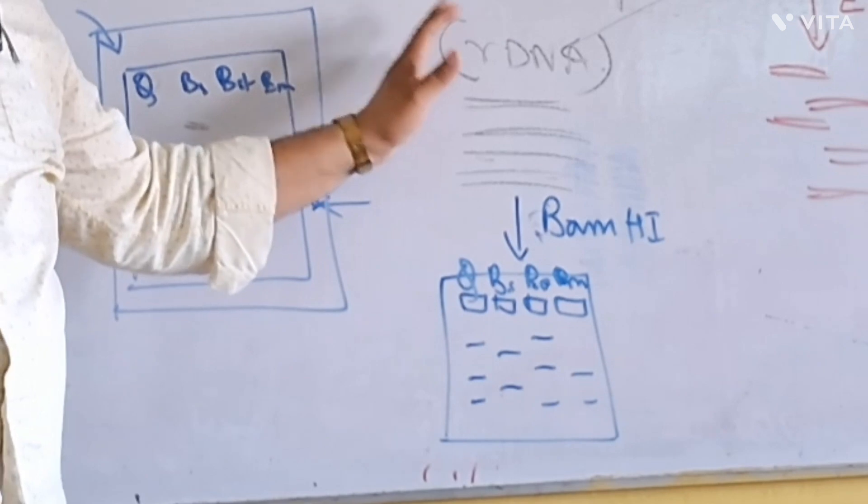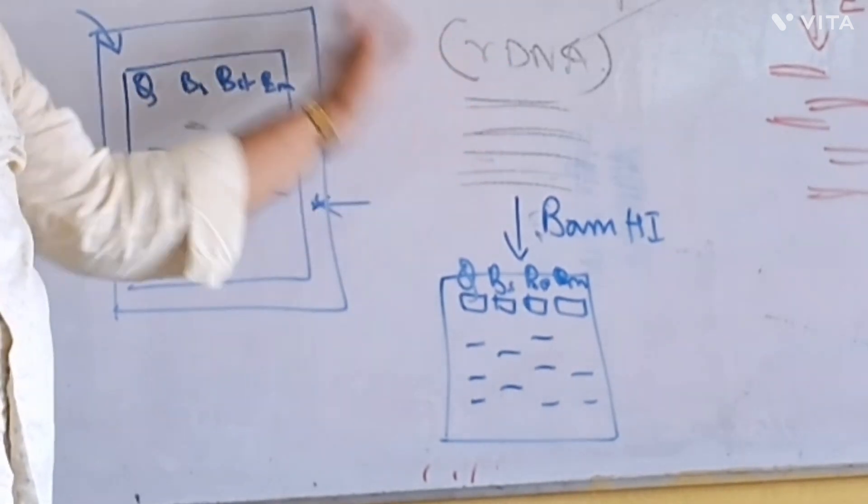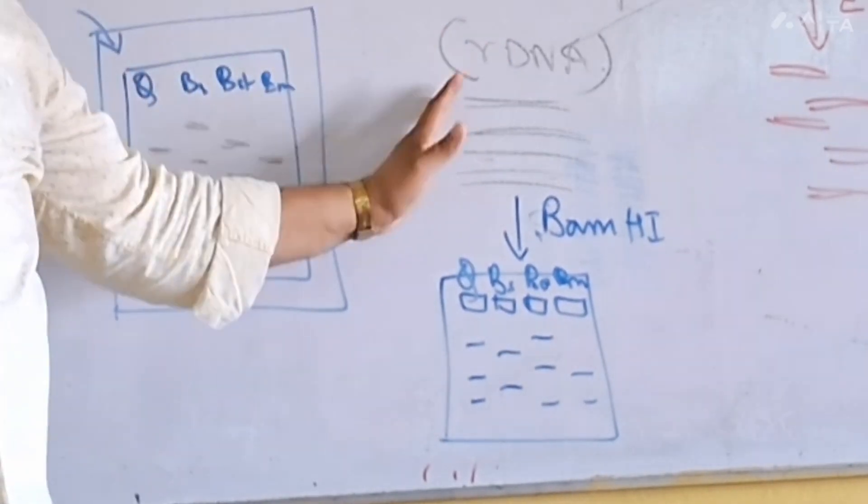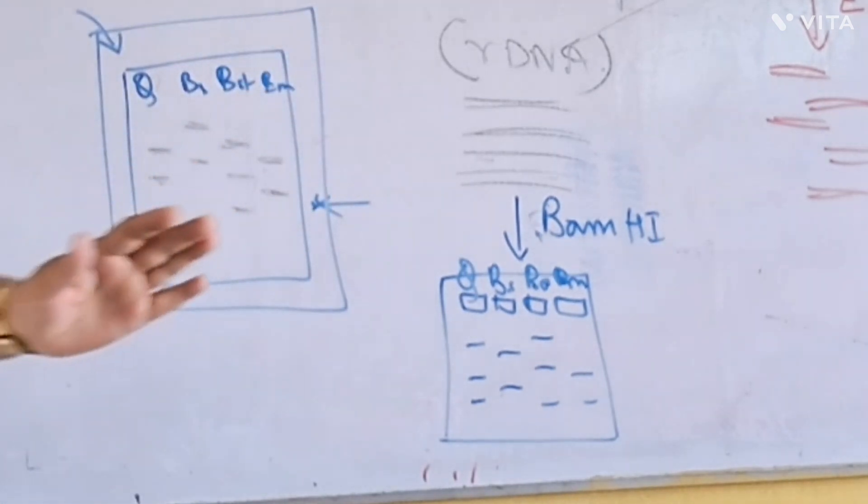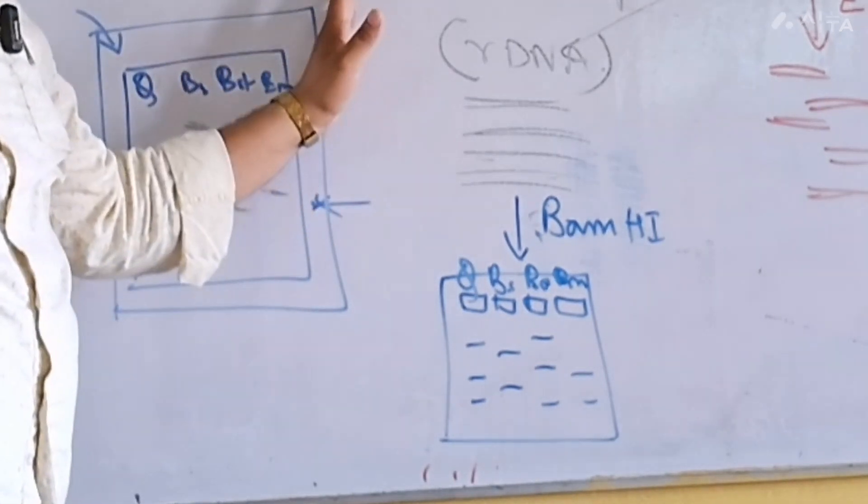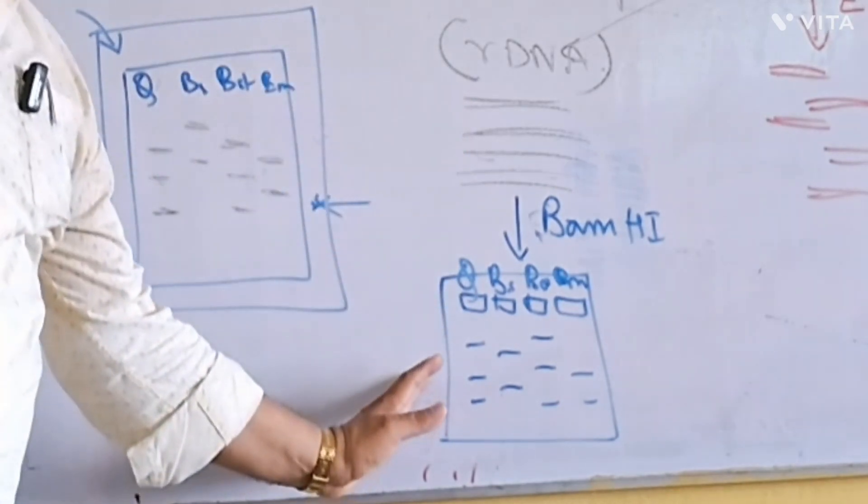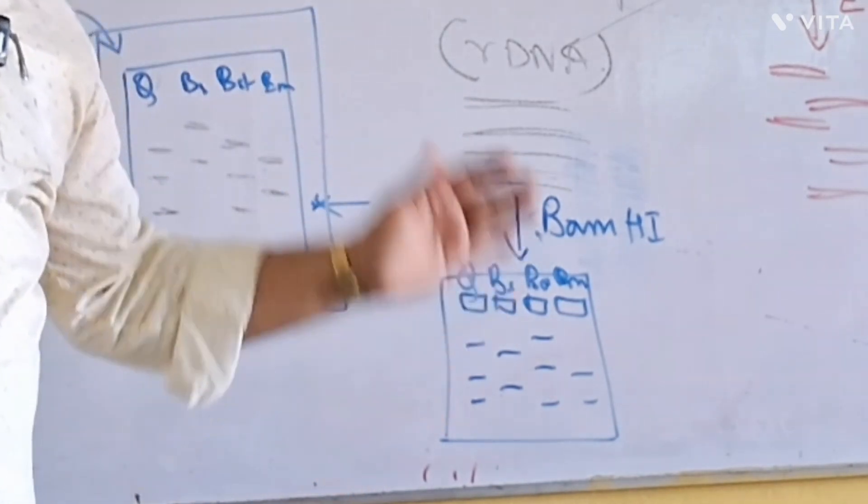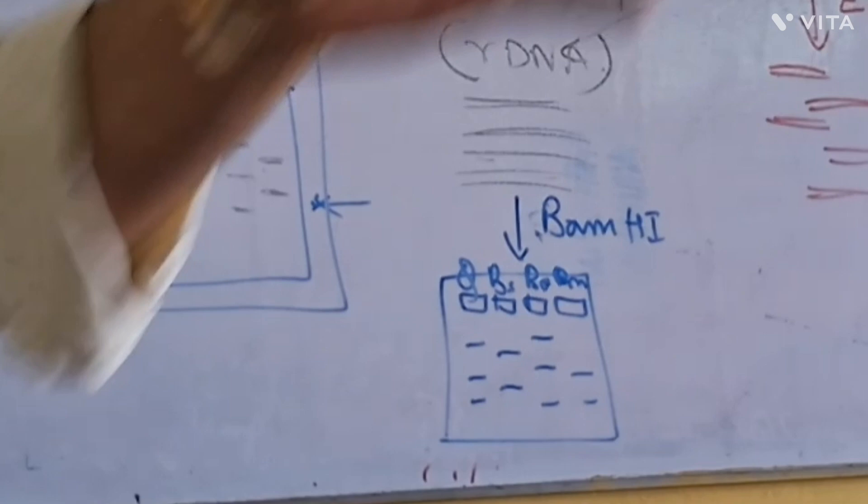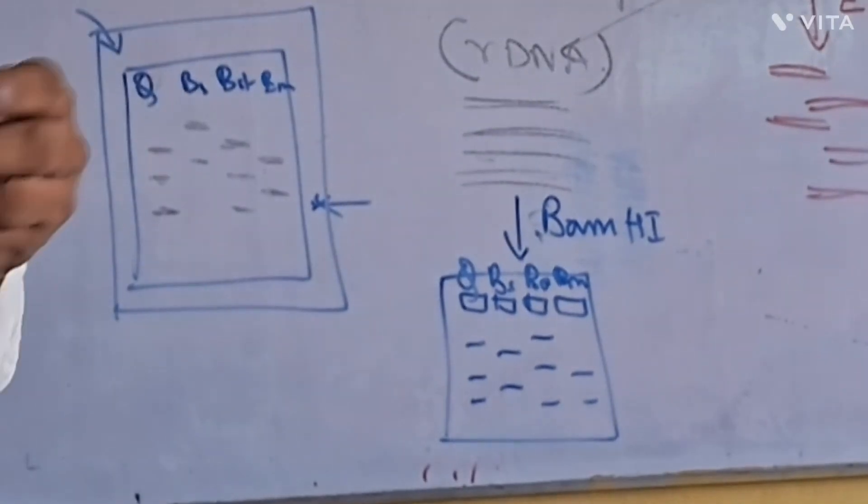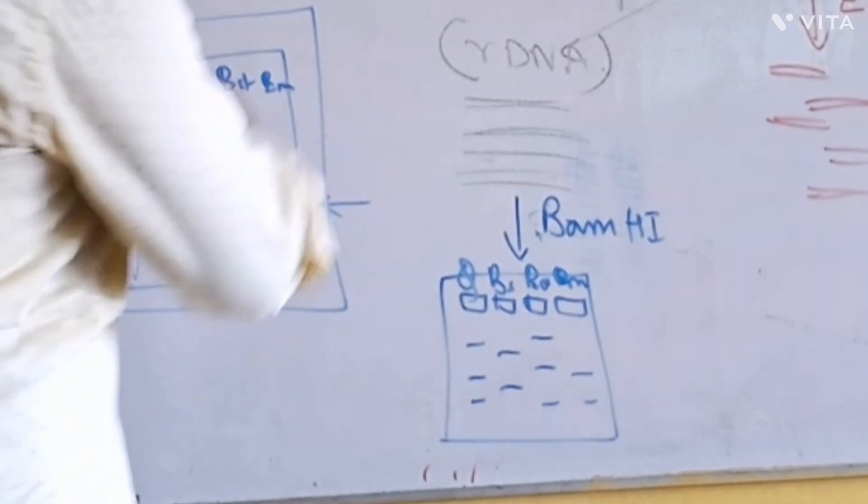So instead of going for sequencing, you can go for—at this level this is rDNA sequencing you have to send it somewhere because you cannot do sequencing here. But before going to sequencing you can do this one. When you are screening a lot of bacteria, you don't need to go for every strain for sequencing. You need to select some of them, then you will go because it is costlier. So definitely you have to decide like that. So this is called ARDRA.